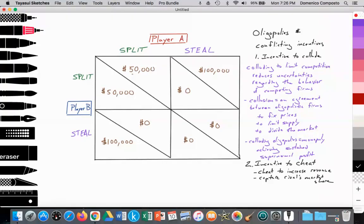Because they're making the secret decision that they will reveal at the same time, it provides the opportunity for a player to steal. If player A steals while player B splits, then player A gets $100,000 and player B gets nothing.